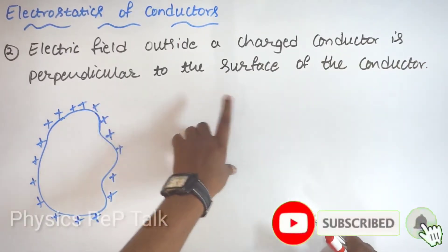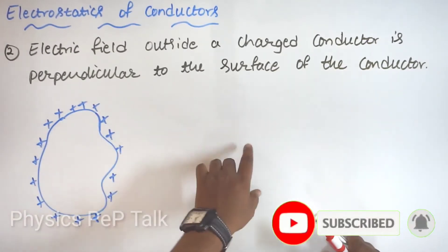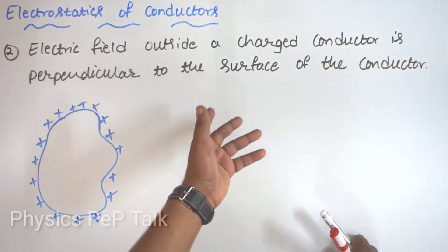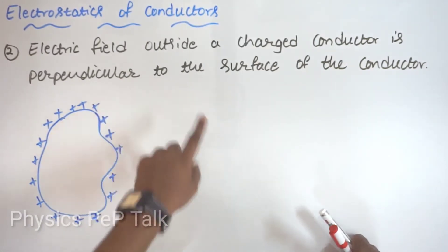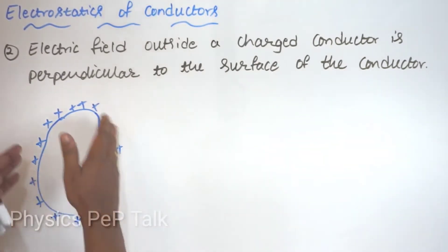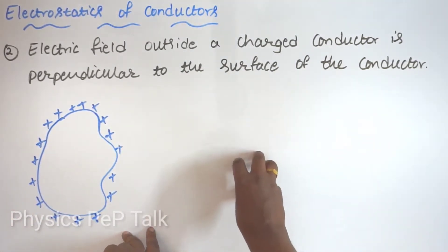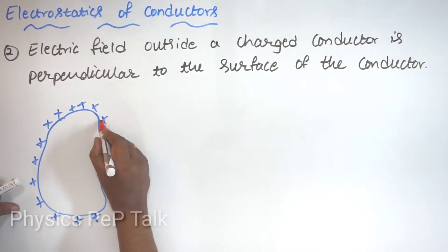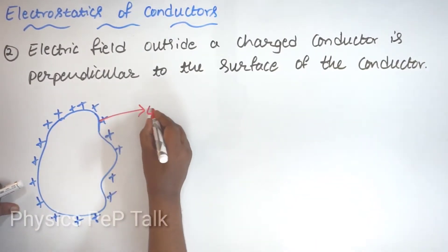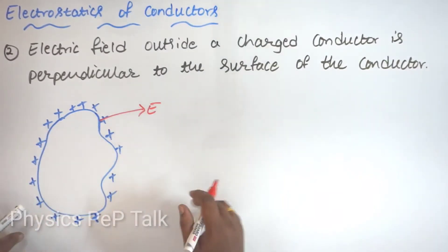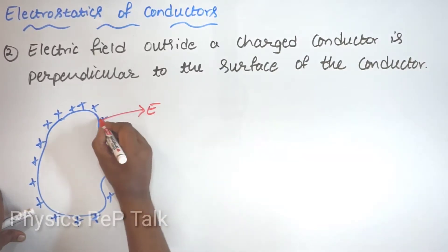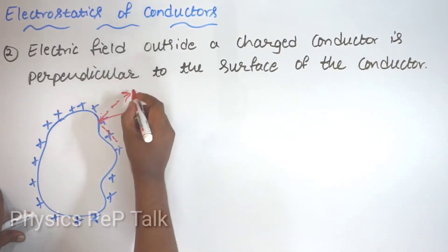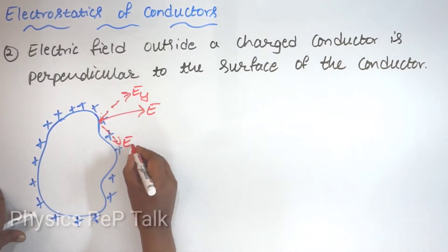Second point: the electric field outside a charged conductor is perpendicular to the surface of the conductor. Consider a positively charged conductor — for a positive charge, the electric field radiates outward in all directions. To prove this, consider a horizontal component E of x and a vertical component E of y, with angle theta between the electric field direction and the x-component.